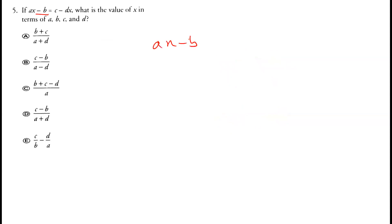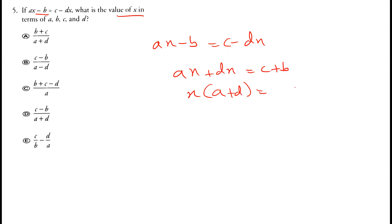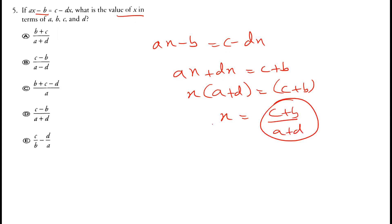Question 5: ax minus b equals c minus dx. Find the value of x. Moving dx over gives ax plus dx equals c plus b. Taking x as common: x times (a plus d) equals c plus b, so x equals (c plus b) divided by (a plus d). Option A is correct.